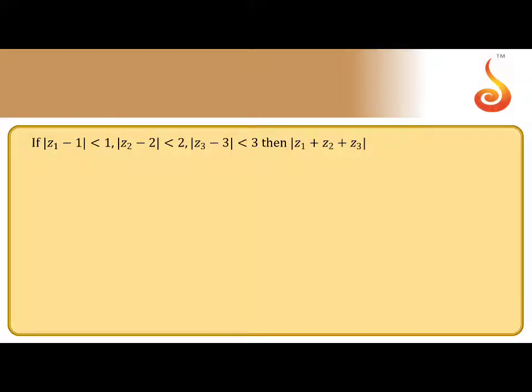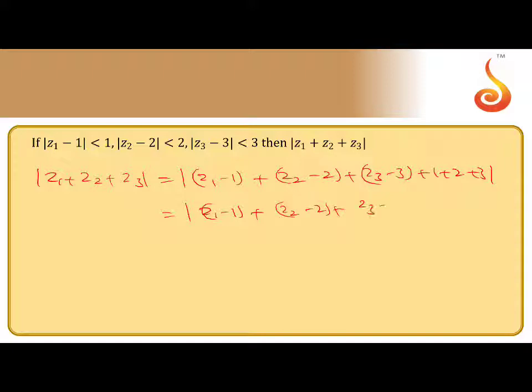First of all, we want to find modulus of z1 plus z2 plus z3. We can add and subtract 1 for z1, for z2 add and subtract 2, for z3 add and subtract 3. So this is equivalent to modulus of z1 minus 1, z2 minus 2, z3 minus 3 plus 6.